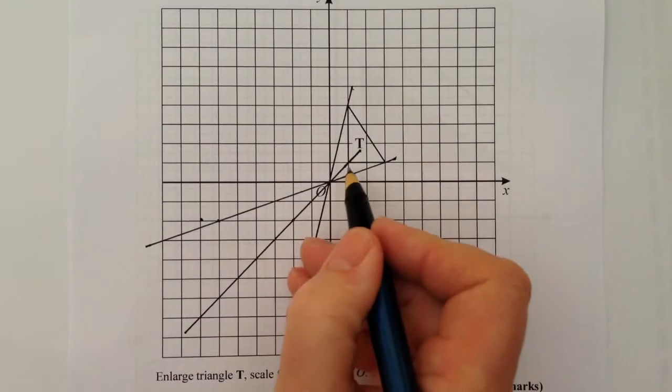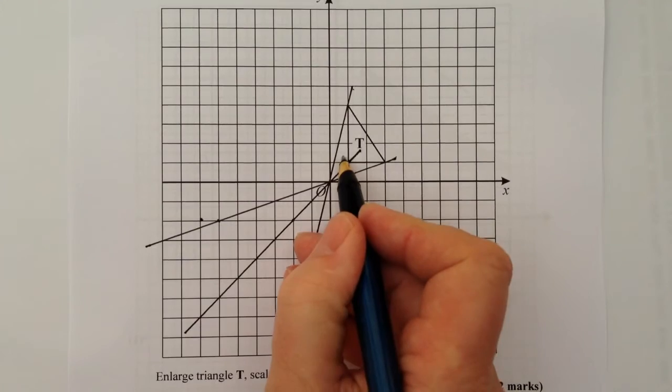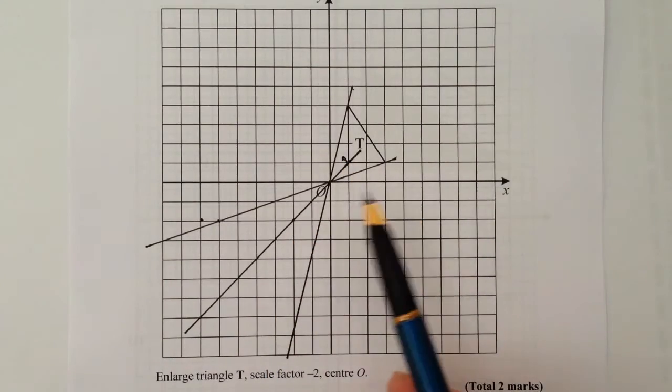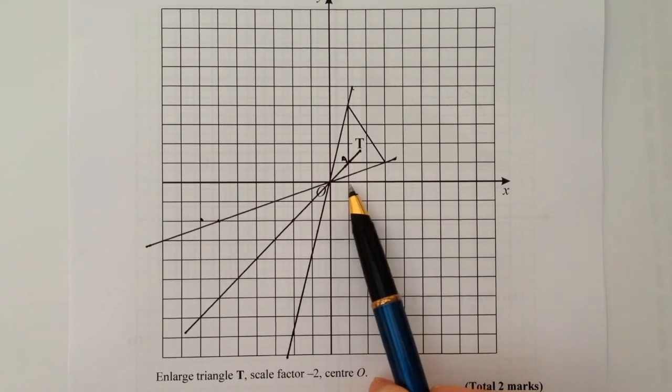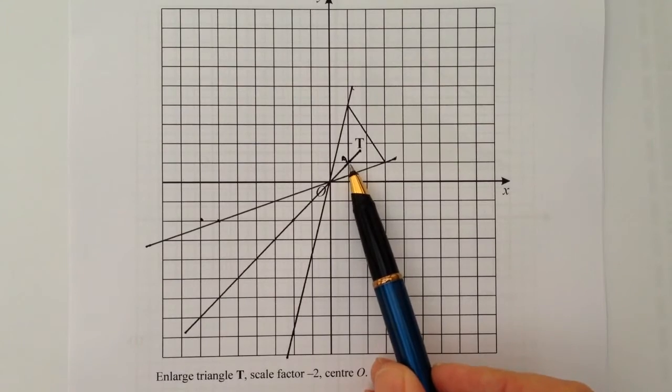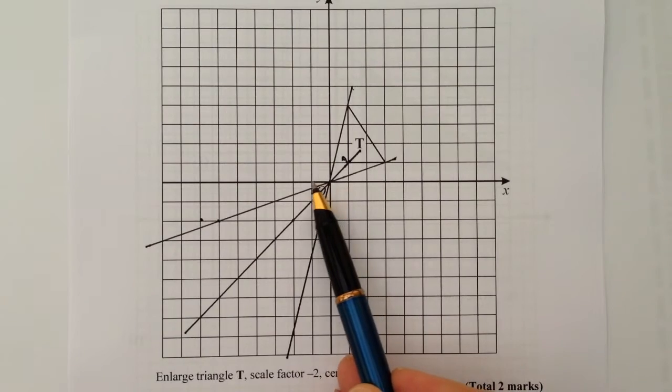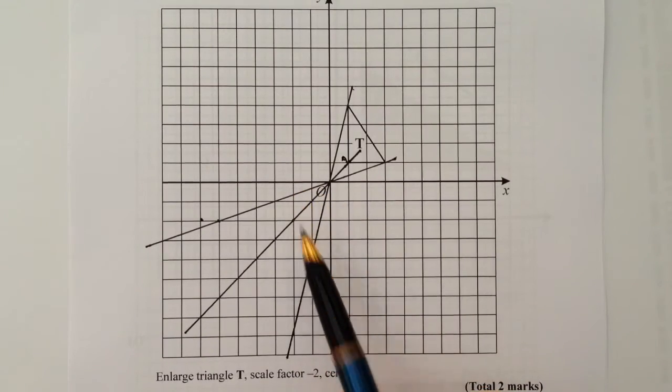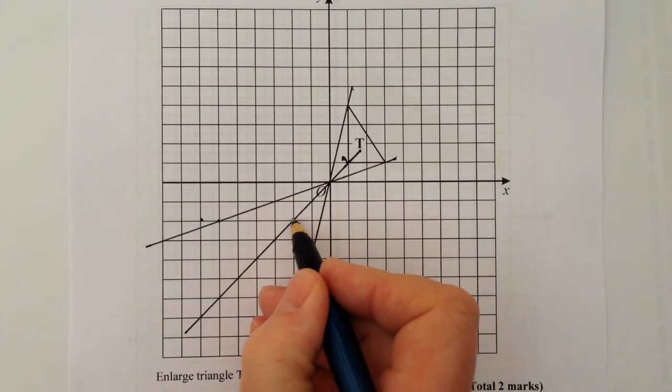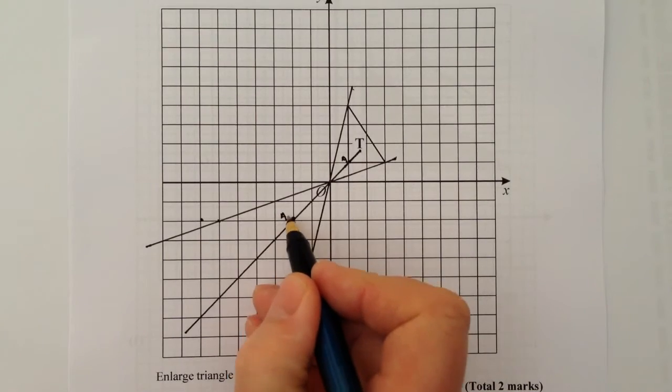So if I go to this point here, let's call this point A, then to get to that point A, I've gone along 1 and up 1. But because it's a scale factor of 2, I'm going to double that, so I'm going to go along 2 and down 2, and that will give me my new point A prime.